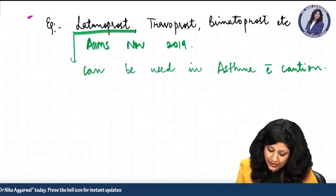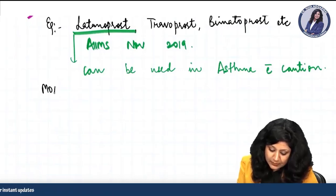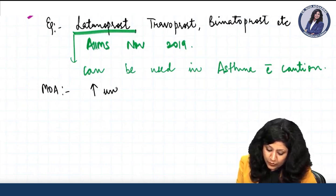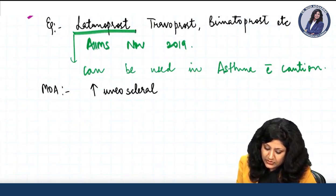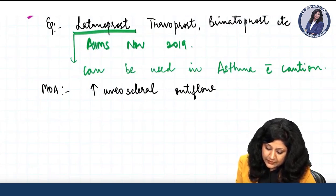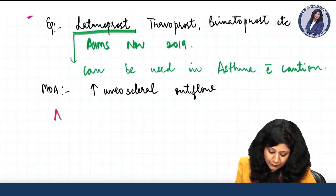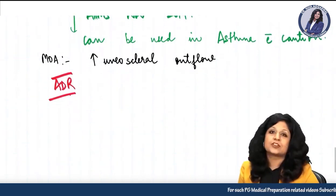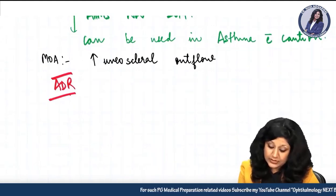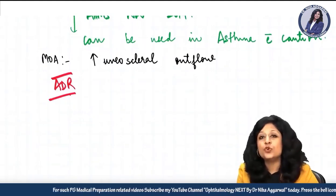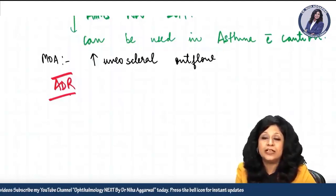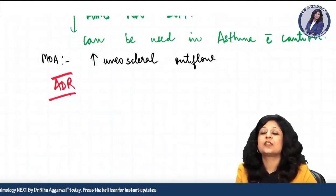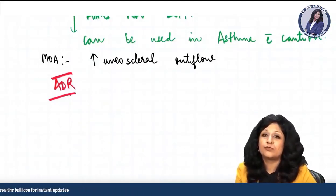The mechanism of action of prostaglandin analogues is the increase in uveoscleral outflow. The adverse reactions of prostaglandin analogues are why beta blockers are still used more commonly, even though prostaglandin analogues are now the drug of choice.